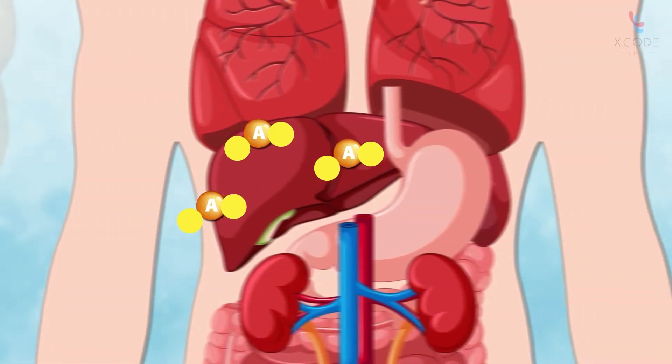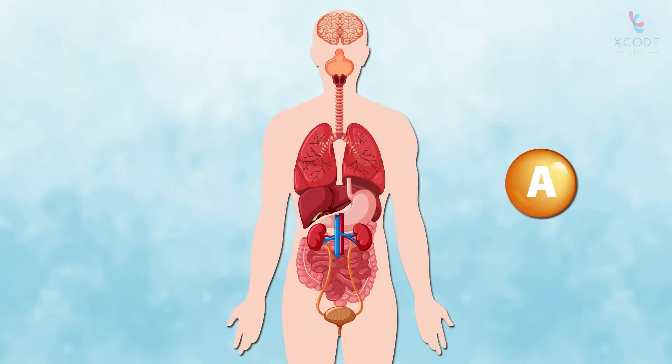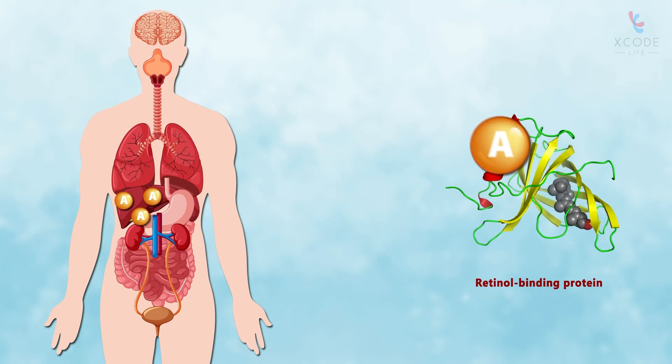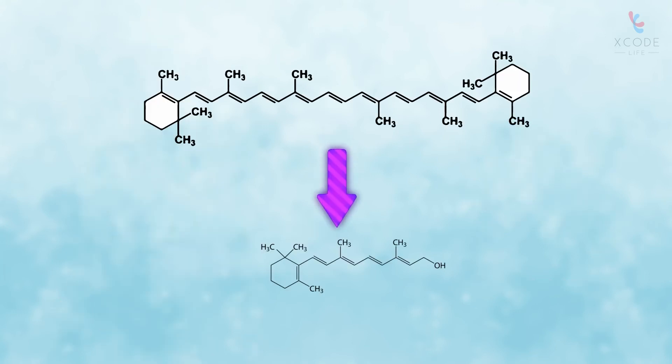From there it is transported to and stored in the liver. Whenever there's a requirement for vitamin A, retinol is released by the liver. It then binds to a specific retinol binding protein, which serves as a carrier to transport it to various locations of the body. The cleavage or cutting of beta-carotene to form retinol is carried out.